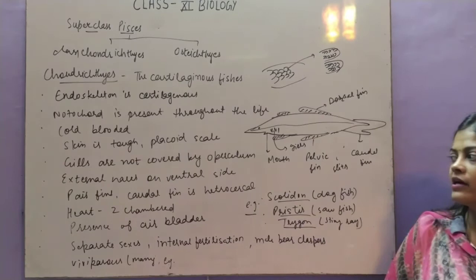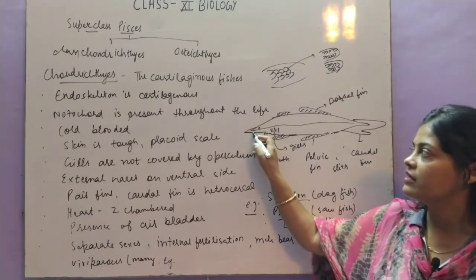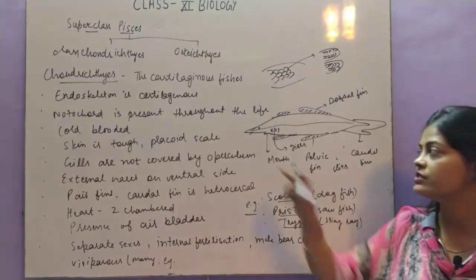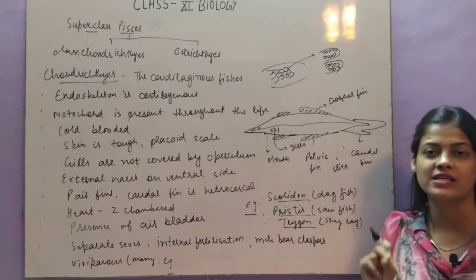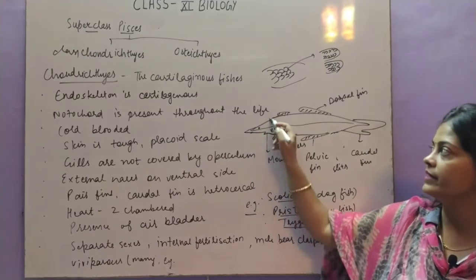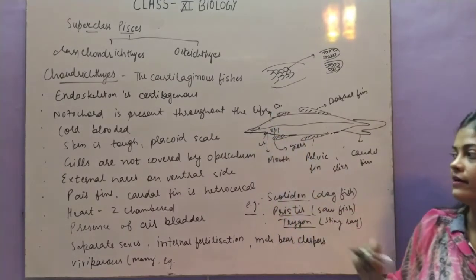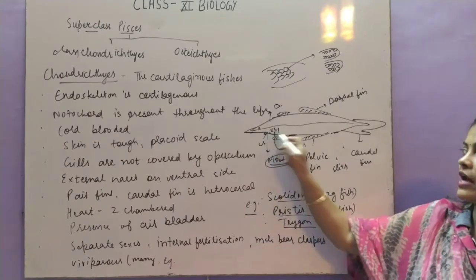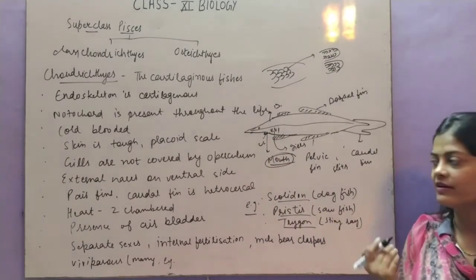External nostrils are present on the ventral side. They have external nostrils only — internal nostrils are absent. These nostrils are present at the ventral side. The mouth is also present at the ventral side — it is called ventral mouth.